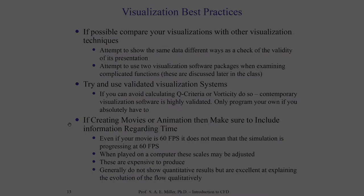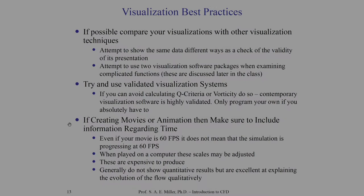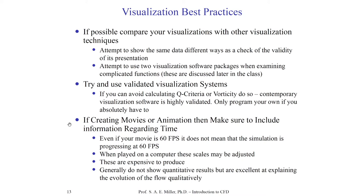More often than not, when you play a movie with your CFD data, it's not happening in the time that we exist in — it might be happening in a much slower or faster rate. I recommend writing the time on the movie. For example, in the first frame, it might be time equals zero seconds, and in the next frame, time equals 0.001 seconds. This way, as the movie progresses, people can see the actual time of the simulation and know it's not in real time. It could be very misleading to show a movie where the time is not calibrated. Generally, I would recommend not showing qualitative results and instead focus on quantitative results, which are more excellent at explaining the evolution of the flow.